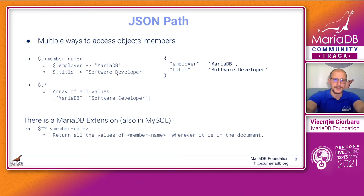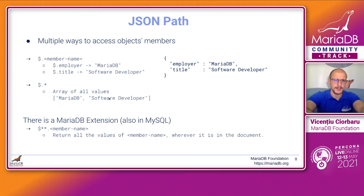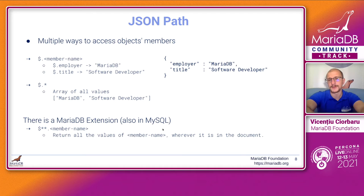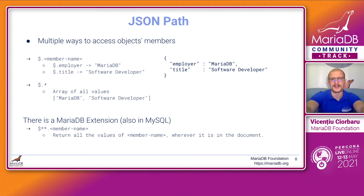That's nice for point lookups. But there are situations when you want to get an array of all the values in a particular object, and you can do that with the star notation. So dot star will get you an array of all values — in this case, MariaDB and software developer. There is also the double star notation, which is like a recursive search for a particular key name. This will return all the values of that member name regardless of where it is in the document. This is useful because JSON is often nested with values buried somewhere deep inside the object, and it helps whenever you need to restructure your JSON documents.